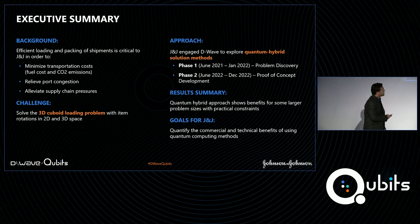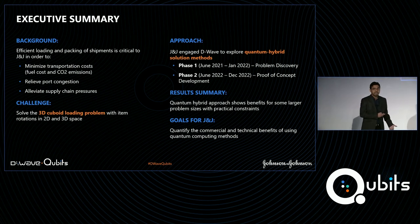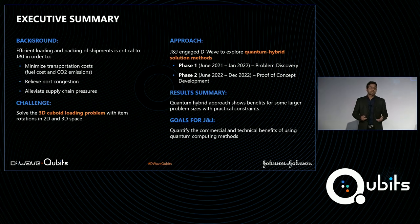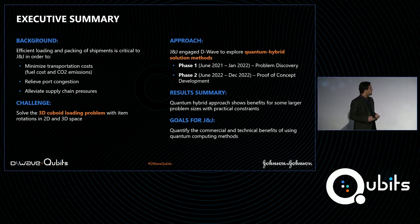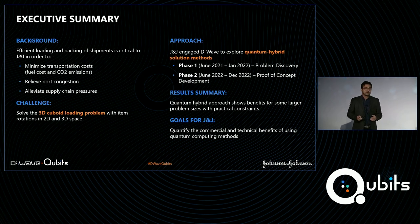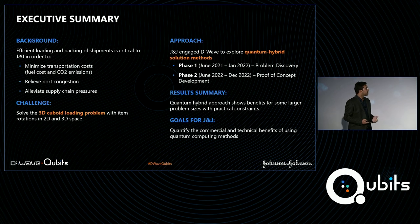One of the key findings was that the quantum hybrid approach shows significant benefits when dealing with larger real-world problem sizes and complex constraints. Through the computational testing, we were also able to quantify the commercial and technical benefits of using quantum computing for J&J.